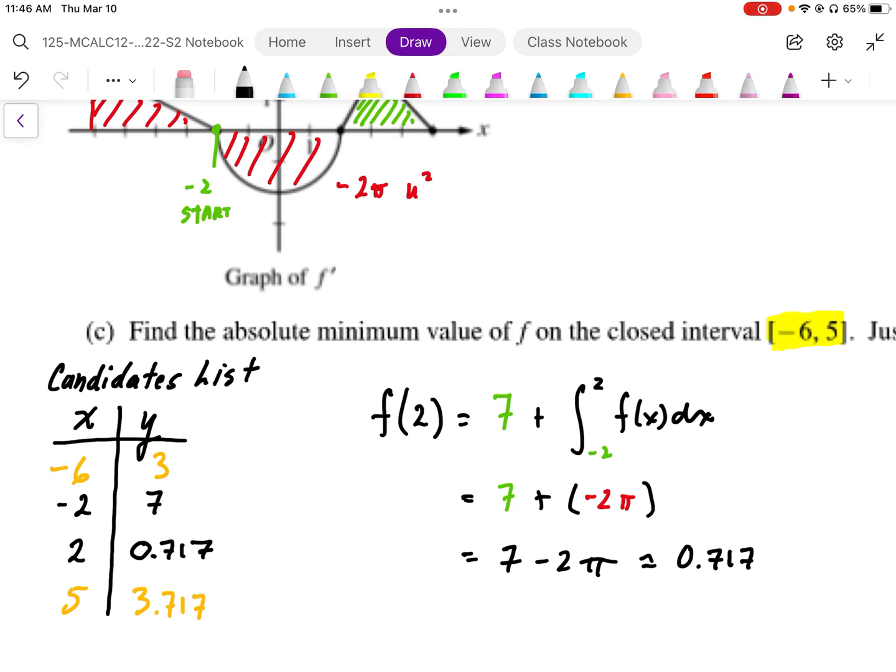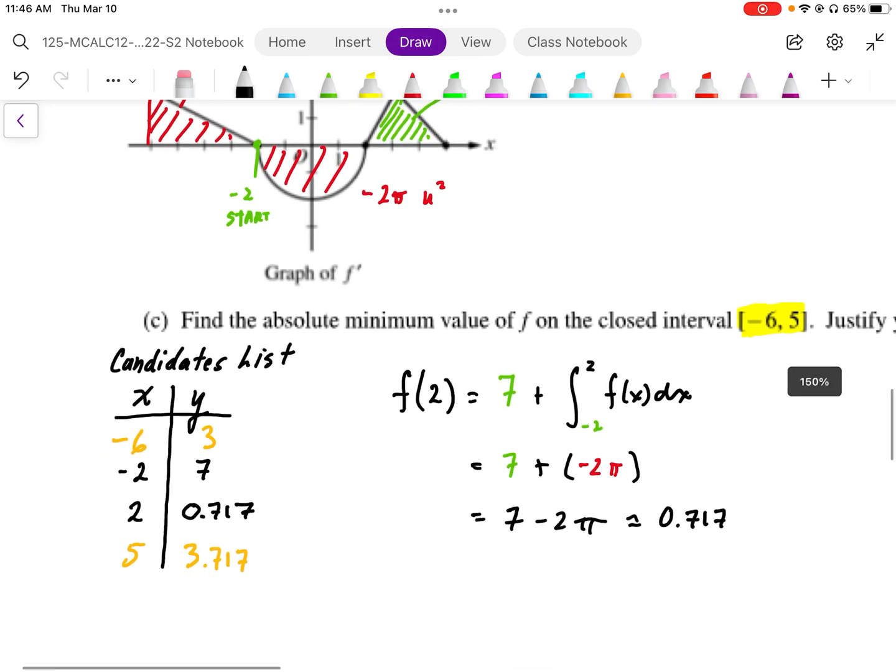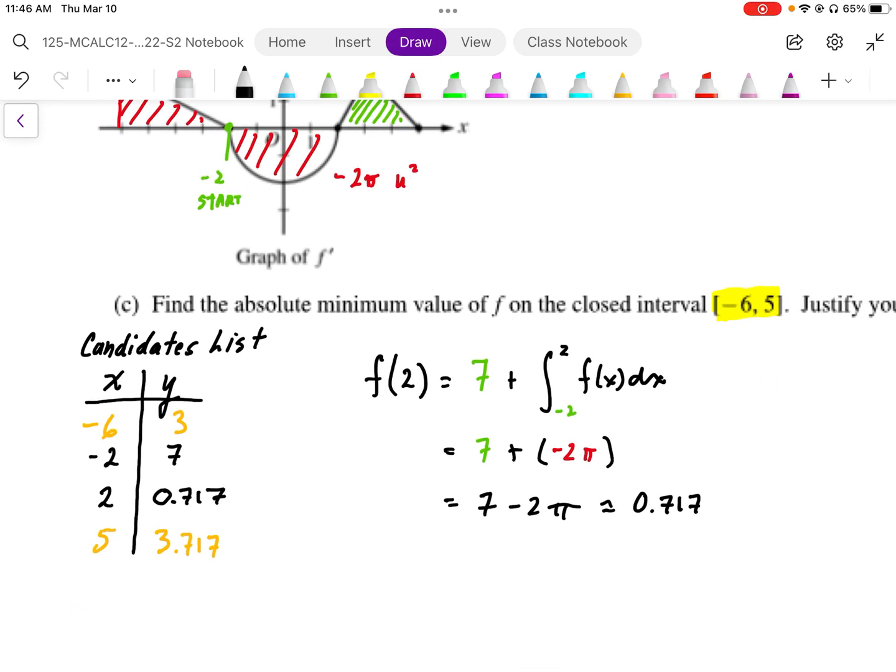And those represent the points that I need to check. So looking at the candidates list, the absolute minimum is going to be the lowest point. So the absolute minimum is going to occur at x equals 2. The absolute minimum is at x equals 2, y equals approximately 0.717.